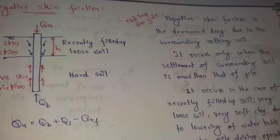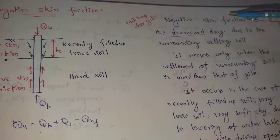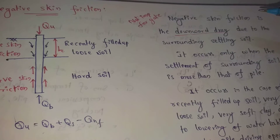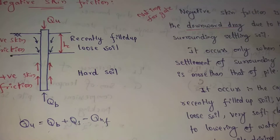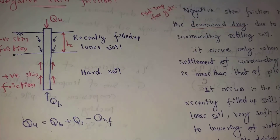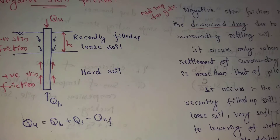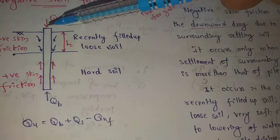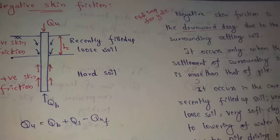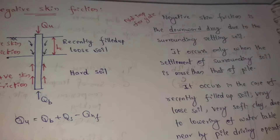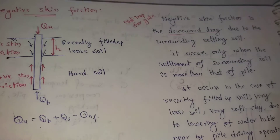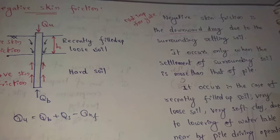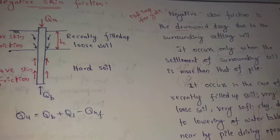Negative skin friction is the downward drag due to the surrounding soil settling. The surrounding settling soil acts in the downward direction. It occurs only when the settlement of the surrounding soil is more than that of the pile.